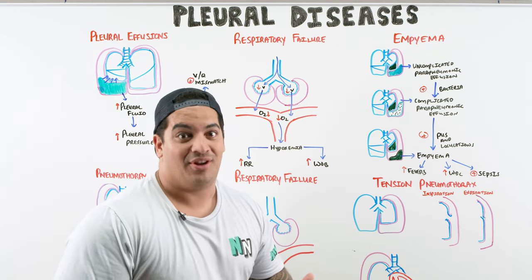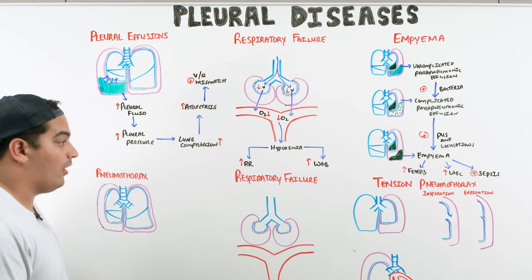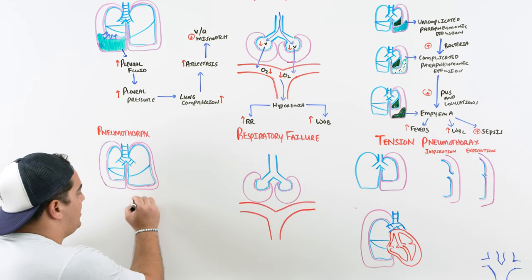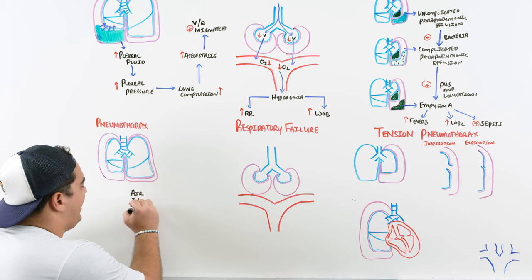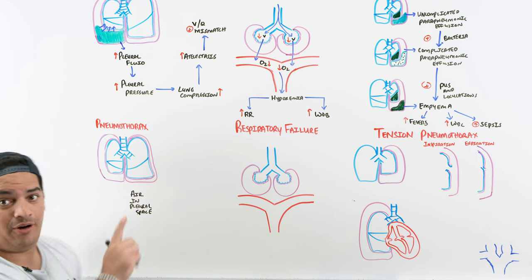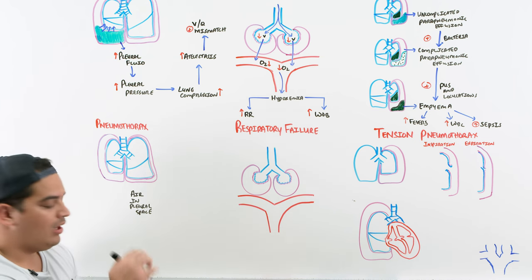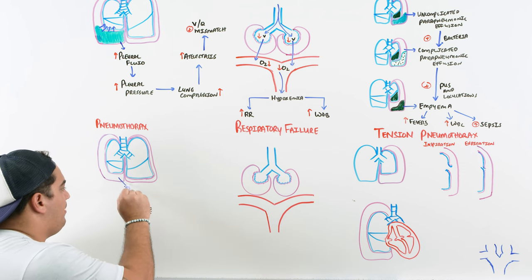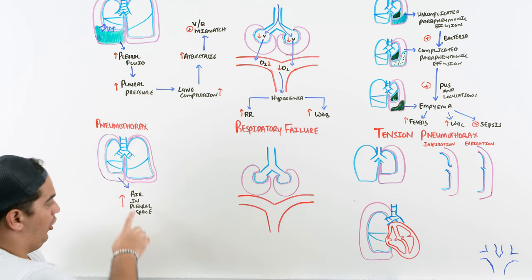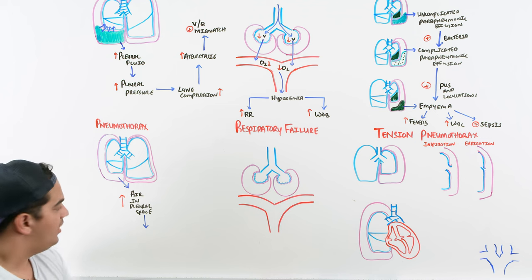Now let's discuss complications of pneumothorax. When air accumulates in the pleural cavity, pleural pressure rises. This causes lung compression, then atelectasis, then V/Q mismatch, and ultimately hypoxemia — the same pathway as with pleural effusions. There should normally be no air in the pleural space; any air present constitutes a pneumothorax.